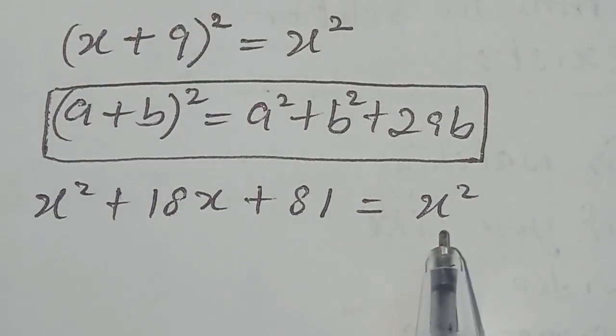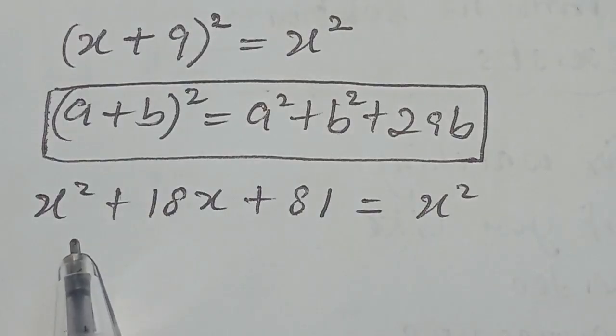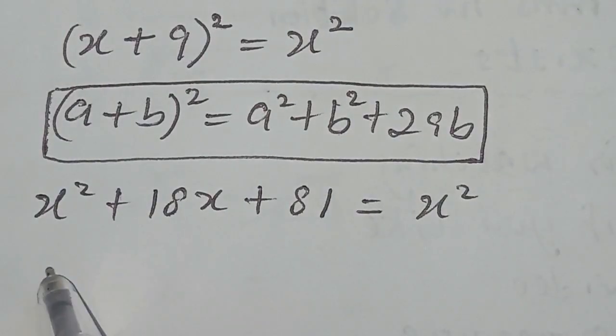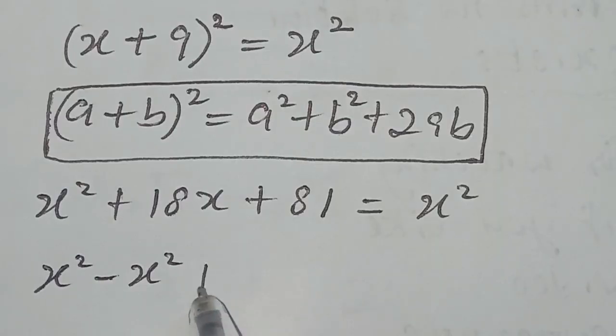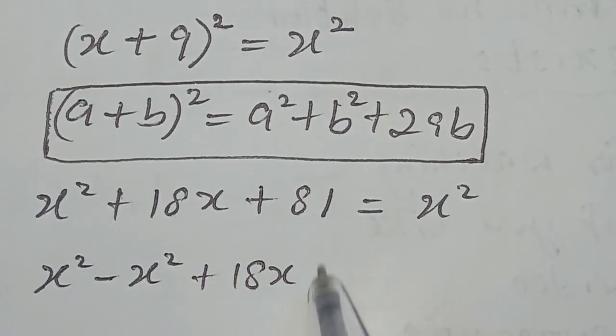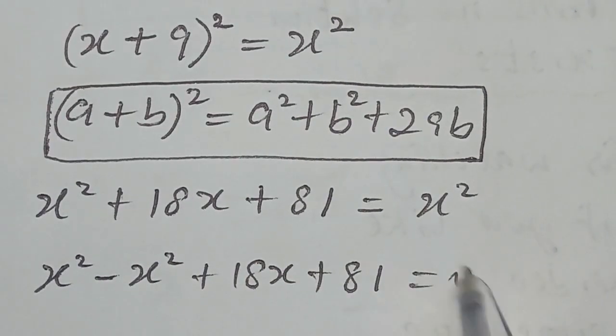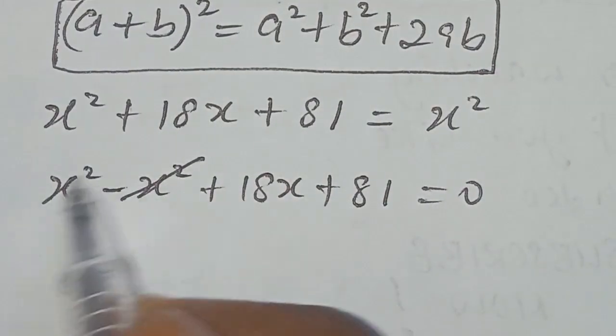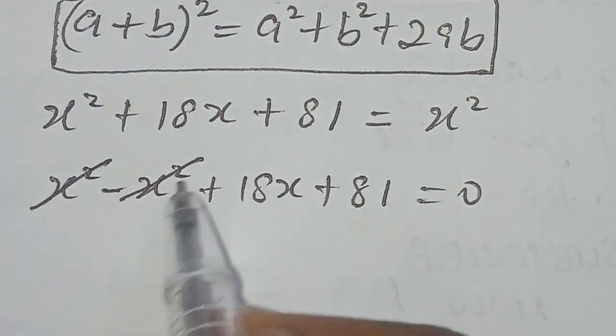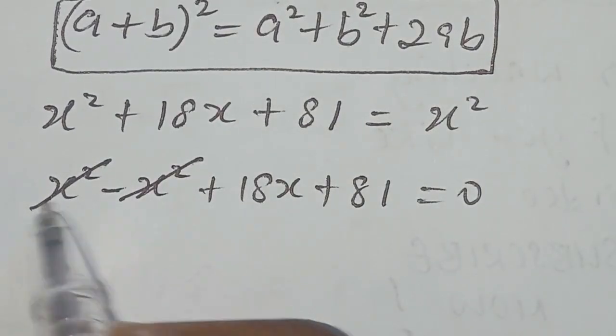Now, from here, we move this x squared to the left-hand side. We have x squared minus x squared plus 18x plus 81 equal to 0. We can see from here, this x squared cancels out with this x squared.